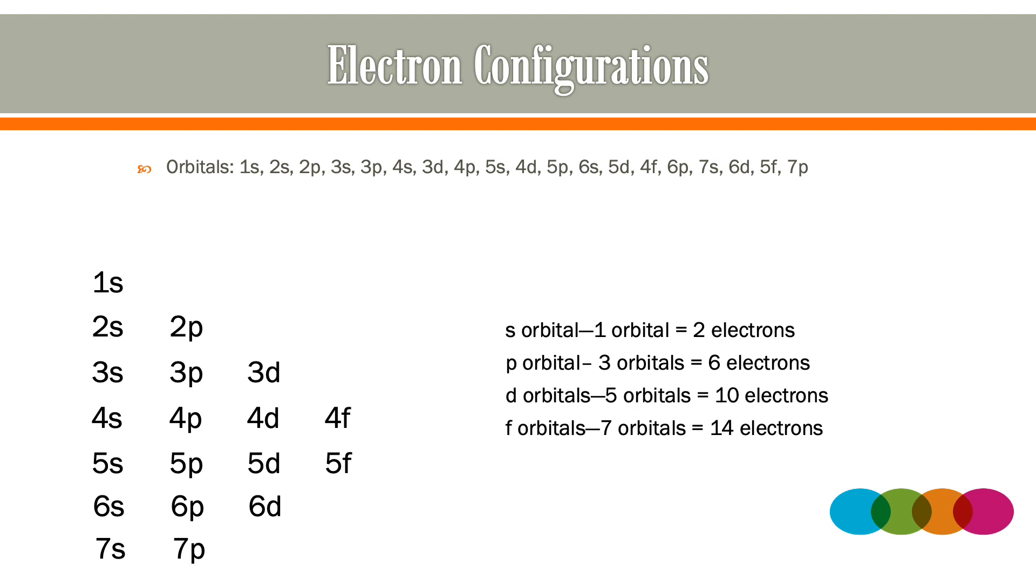For example, list the s, p, d, and f orbitals according to the quantum number rules shown here. Then, draw diagonal lines starting with the 1s orbital as shown.